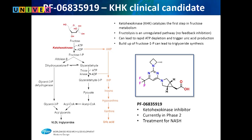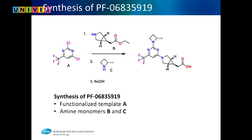Normally your body diverts glucose to other pathways, but it doesn't do that with fructose — so all fructose you eat becomes fat. We want to stop that by inhibiting this enzyme. Like the other compound, this one has a breakthrough designation and is in Phase 2, hopefully moving to Phase 3 and approved very quickly.